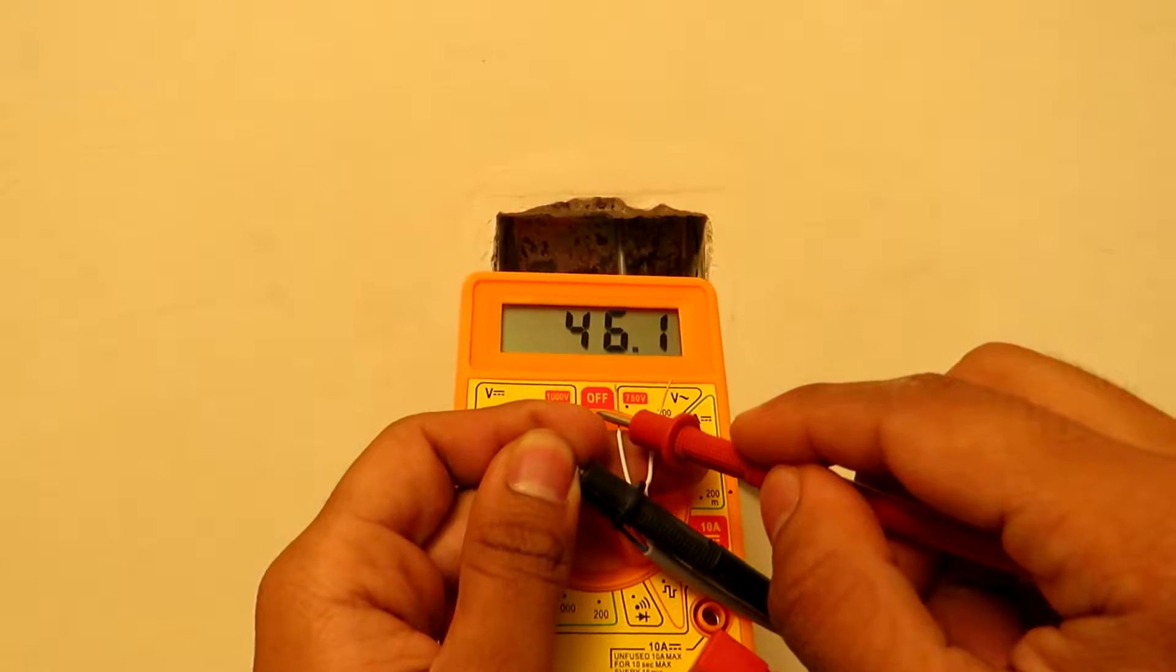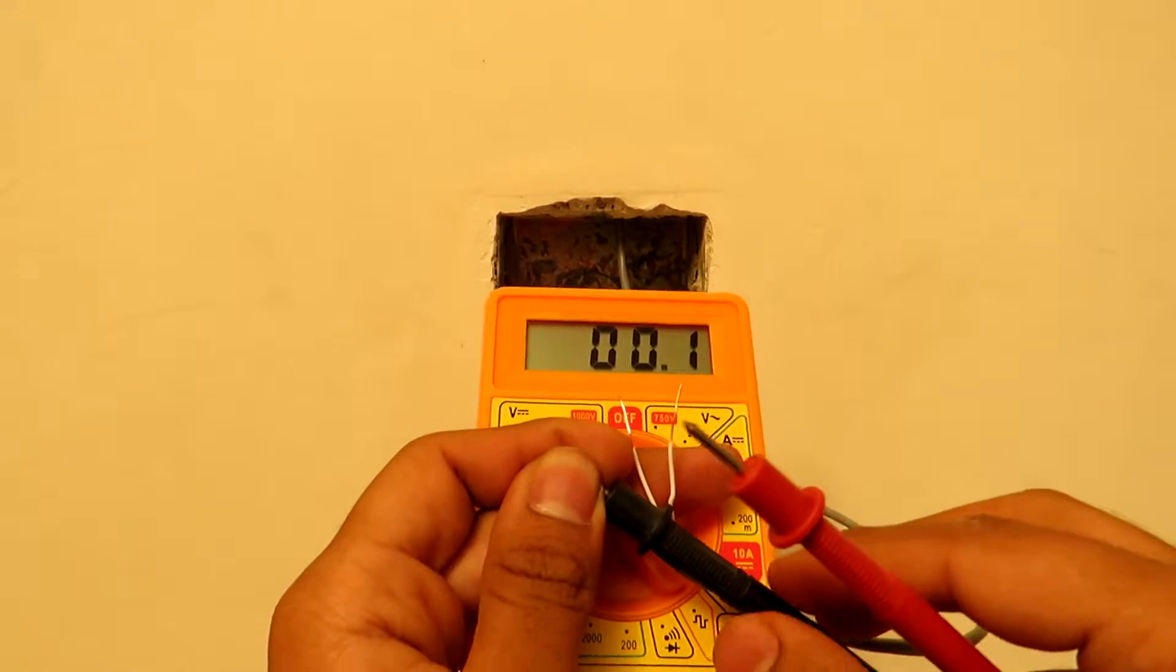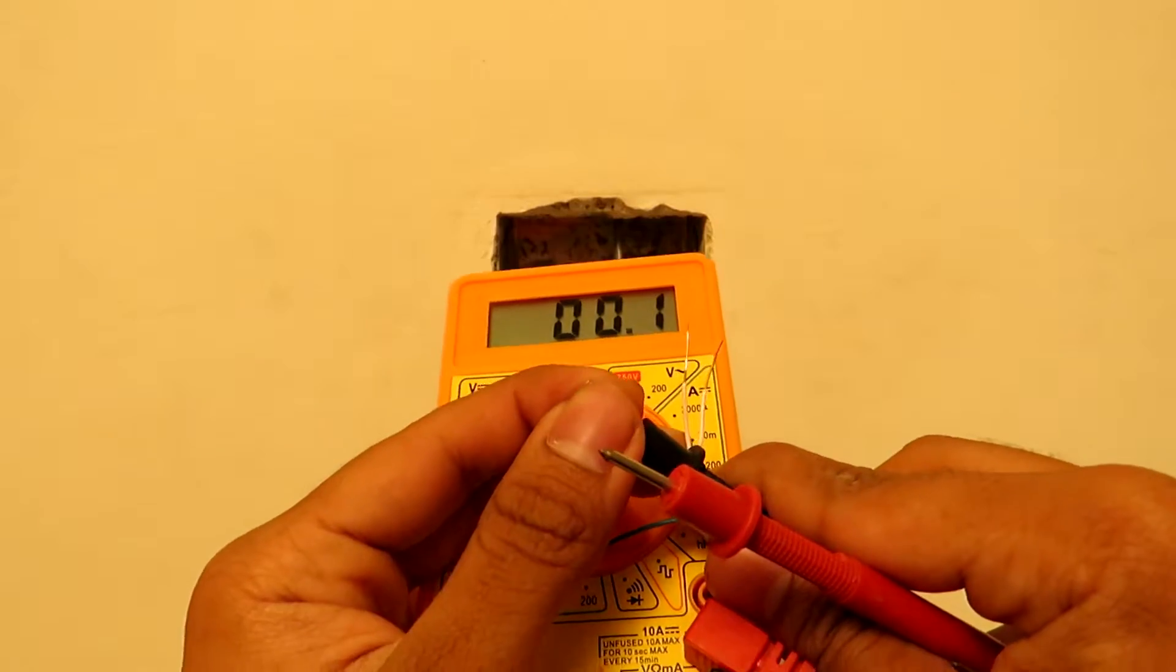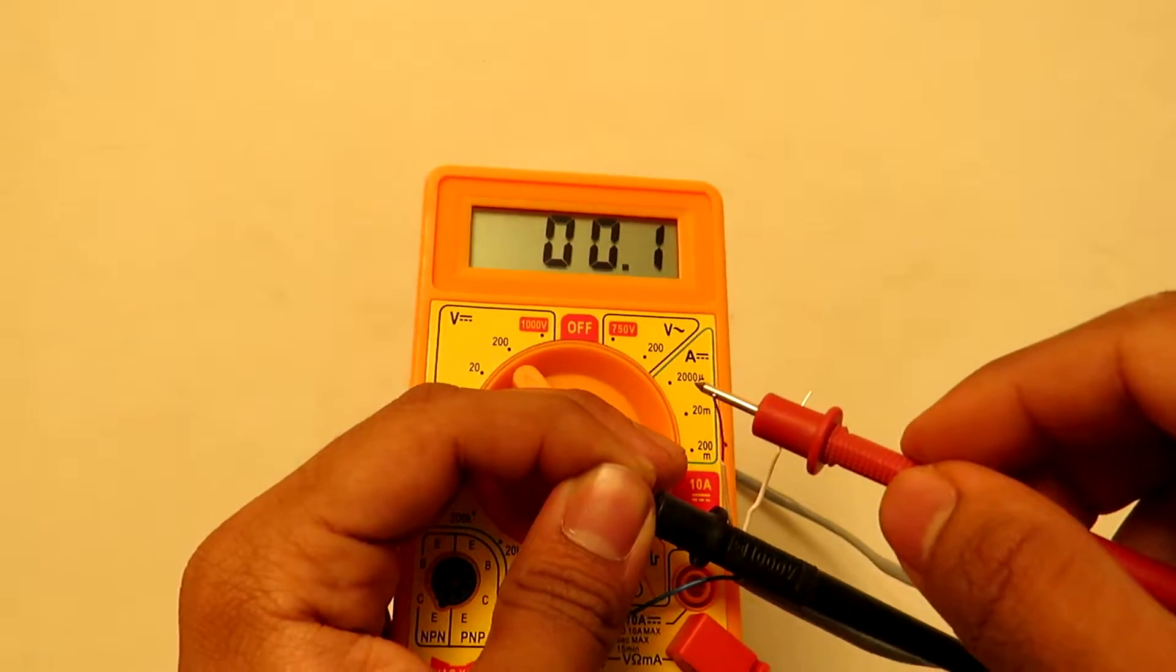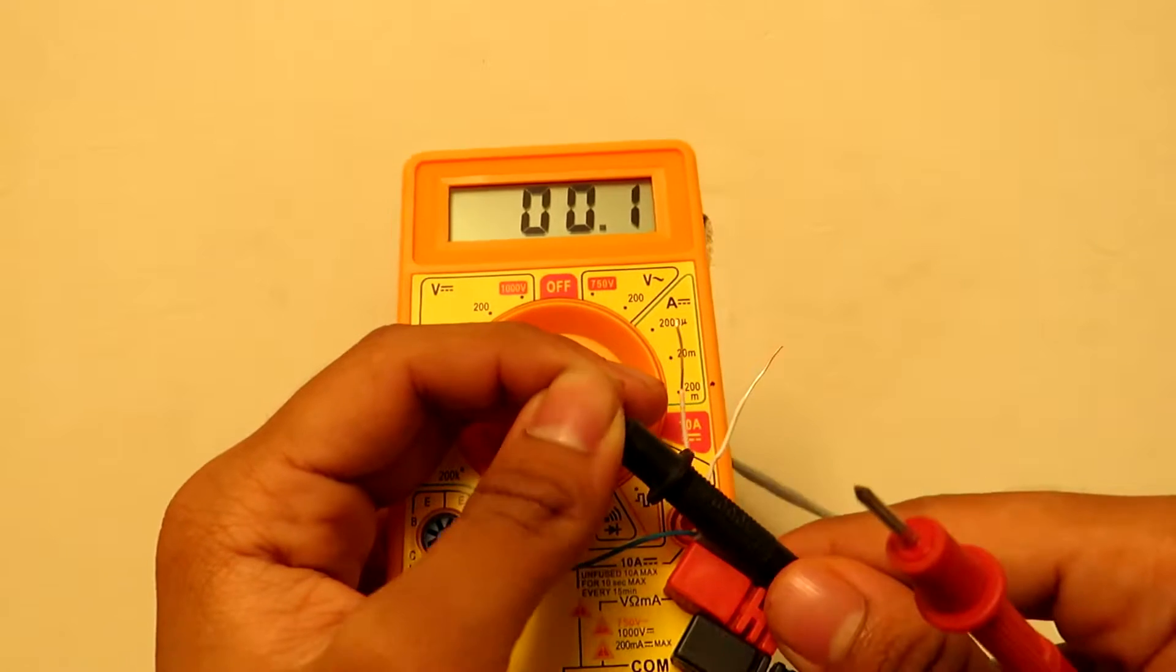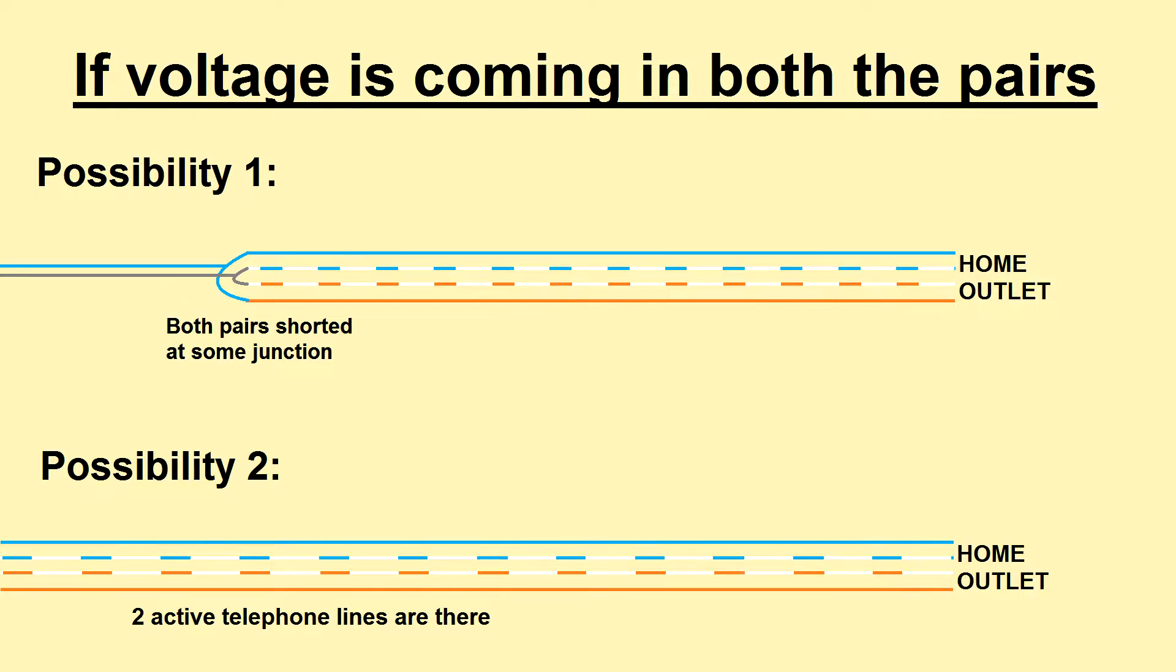If there is no voltage on the blue wire, then we will place one lead on the orange wire and the other lead on the white wires one by one and check. Here you can see that there are no other active pairs.